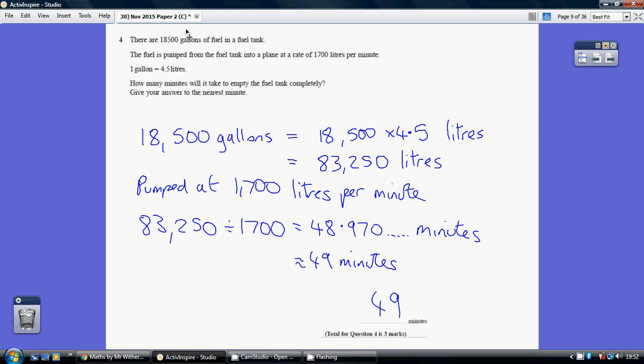So 18,500 gallons is how many litres? Gallons to litres - we're aiming to get a bigger number, so we must be multiplying to get a bigger number. We'll take our 18,500 gallons, times it by 4.5, and that gives us 83,250 litres.